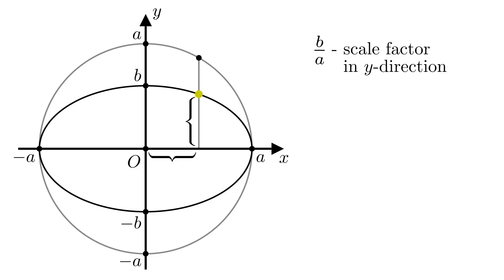If we call the point on the ellipse p and the corresponding point on the circle p', then the x-coordinate of p is equal to the x-coordinate of p', while the y-coordinate of p is equal to b over a times the y-coordinate of p'.